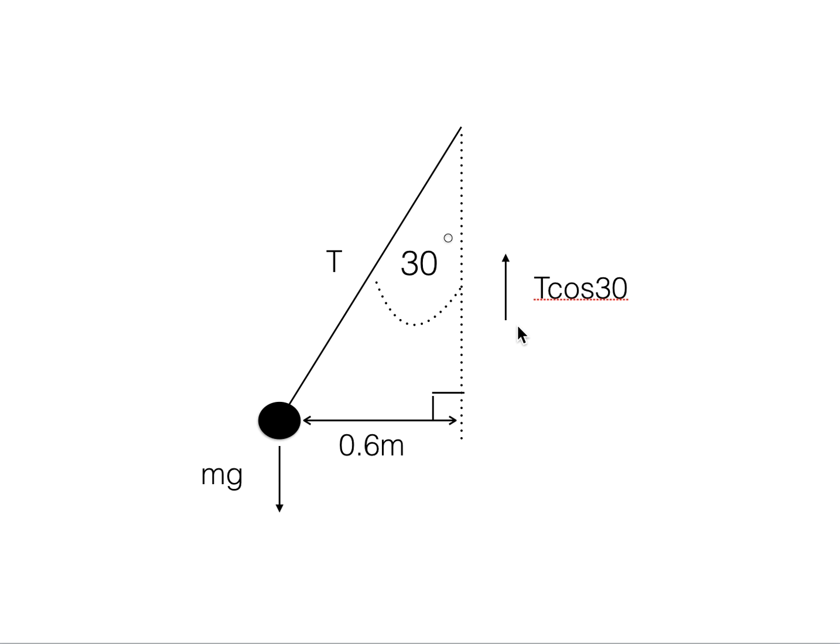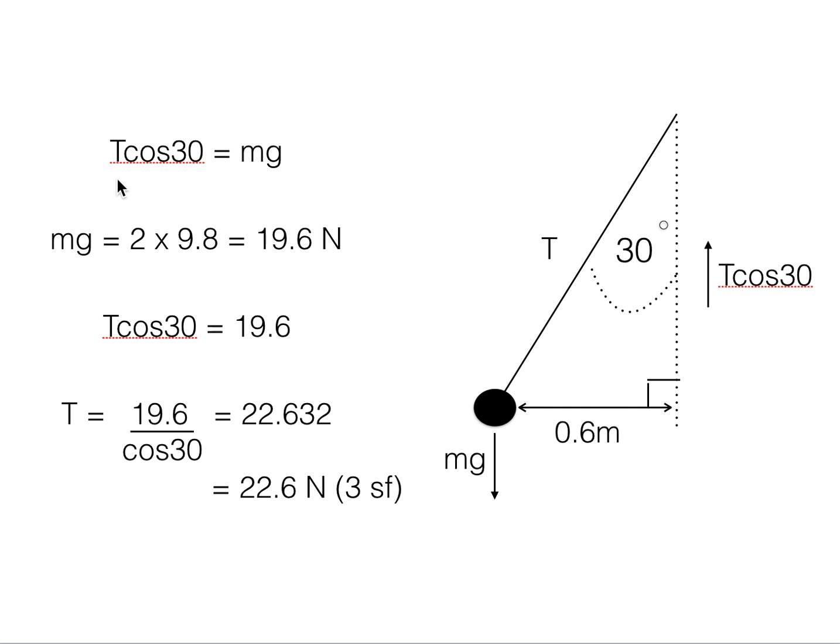...and an upward force due to the vertical component of the tension in the string. To make the resultant vertical force zero, these two must equal each other. So we can construct the equation T cos 30 equals mg.